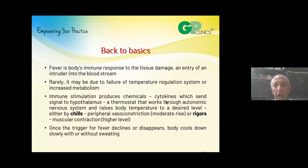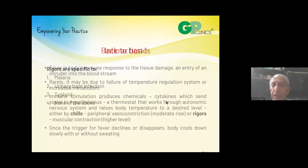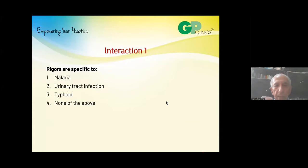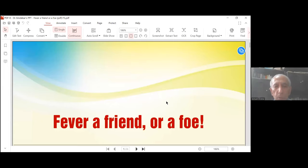Let's see how you apply it in our first interaction. I am going to give you four probable answers to the question, and you will have 15 seconds to click which number you feel is right. The question is: rigors are due to which of the following? Malaria, urinary tract infection, typhoid, or none of the above? Your time starts now.